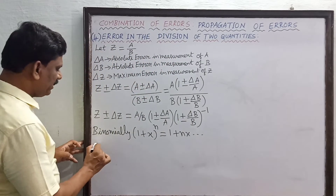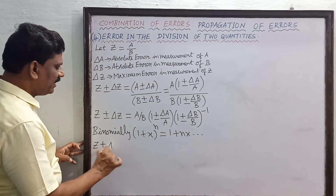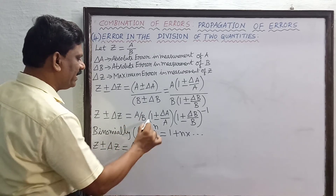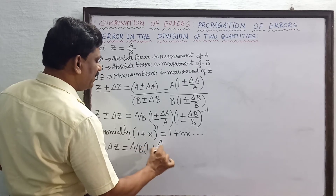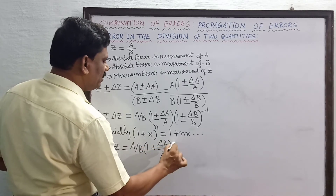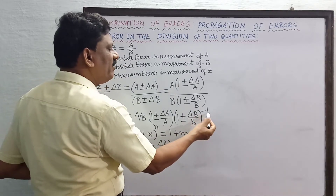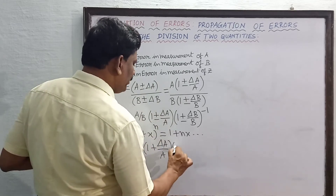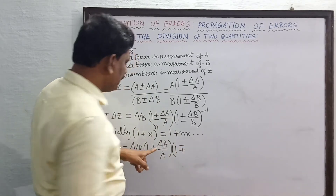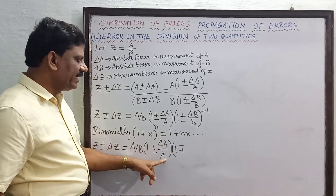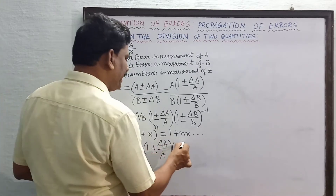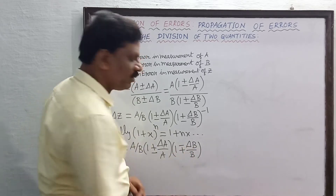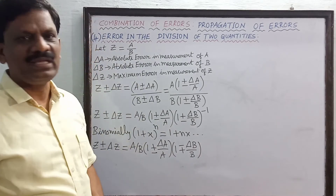Therefore, z plus or minus delta z will be equal to a by b into 1 plus or minus delta a by a. Then this minus 1 multiplied with plus or minus will become minus or plus. So this will become 1 minus or plus delta b by b. Here plus or minus delta a by a, and instead 1 minus or plus delta b by b — that is the only difference.